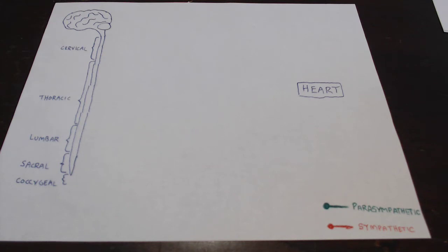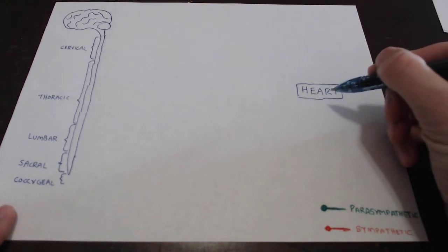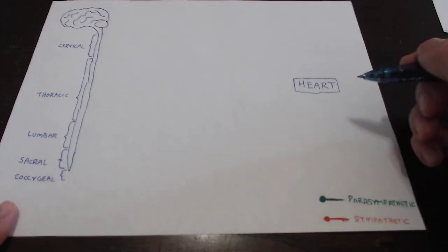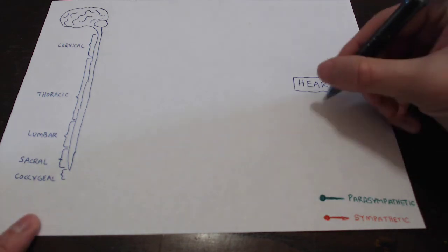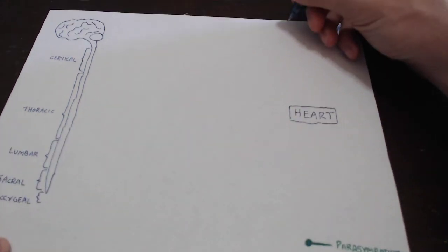What we're going to do here in this video is quickly review how both parasympathetic and sympathetic information tend to get to their effectors from the central nervous system. For the most part, we're talking about efferent pathways here. The first thing to understand is that most organs, with a few exceptions, are what we call dual innervated.